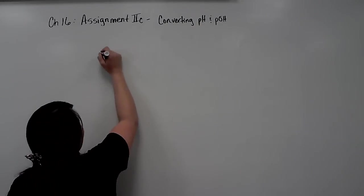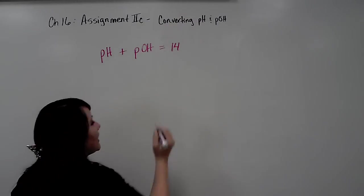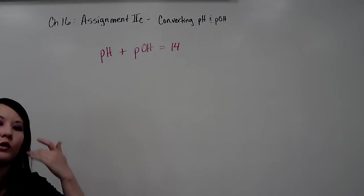The equation is pH plus pOH equal 14. The sum of the pH and the pOH should be equal to 14.